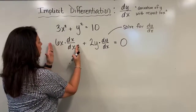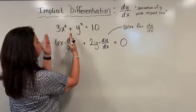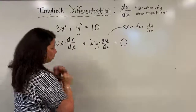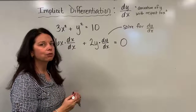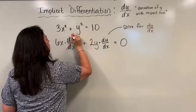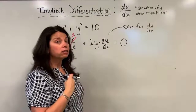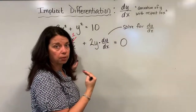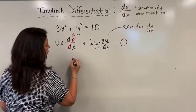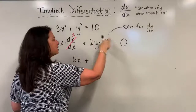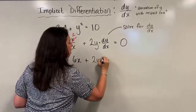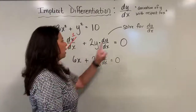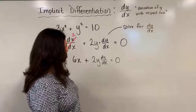Now, remember, in the 3x squared, we're finding the derivative of that 6x, but we were finding the derivative of x with respect to x. It turns out dx over dx is simply just one. So I don't have to write it — I like to write it just because it reminds me that I'm taking the derivative of x with respect to x. Then I go in and put my one in. So this reduces down to just 6x plus 2y times dy over dx, and the whole thing still equals zero.